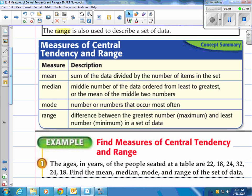So we have mean. What is that? That's the sum of the data divided by the number of items in that set of data. The median is the middle number of the data ordered from least to greatest, or the mean of the middle two numbers if there's two in the middle. And mode is the number or numbers that occur most often. There can be more than one mode or there could be no mode.